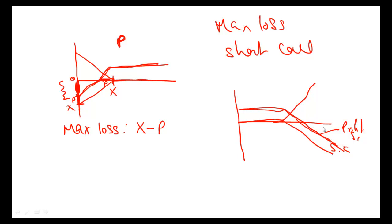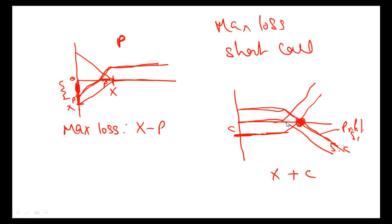What's the maximum loss for a long call? Looking at the profit diagram for the long call, the maximum loss is the premium paid — the option price. The breakeven point for the long call is the strike price X plus the option price C. So the breakeven is X plus the option premium.